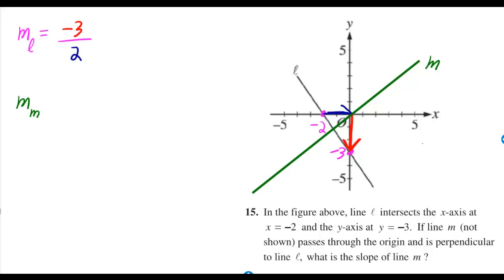That's where line M should go because they told us it passes through the origin and it's perpendicular to line L. Now it actually doesn't matter that it's passing through the origin. The only thing that matters is that it's perpendicular.